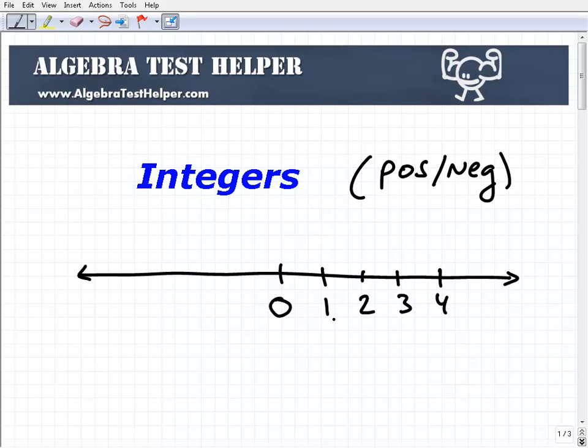These numbers are called the natural numbers or the counting numbers. Then you kind of figured out that zero means something—like I don't have any food or anything else. So when we discovered zero, we have the whole numbers.